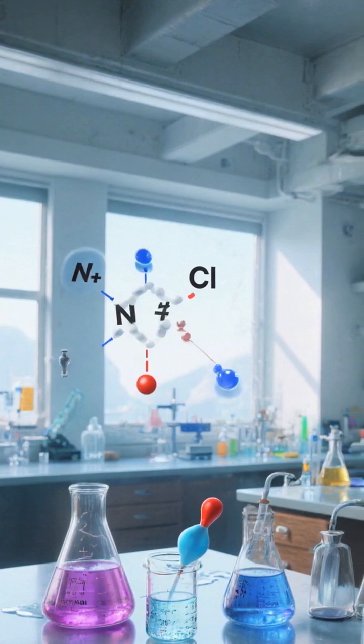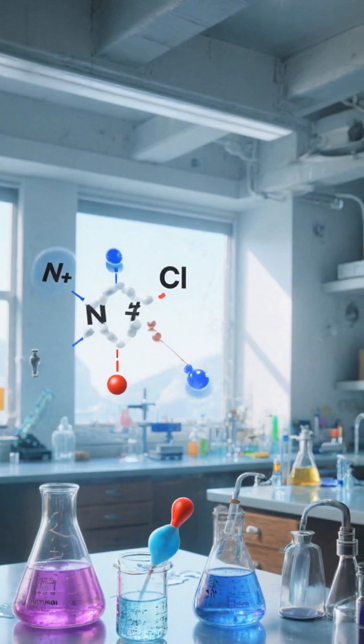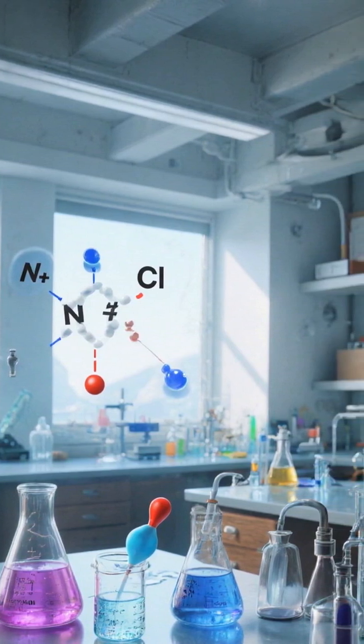How it works: Dissolution. NaCl splits into Na+ and Cl- ions that interfere with ice crystal formation, so water must be colder to freeze.